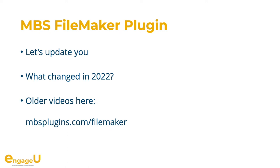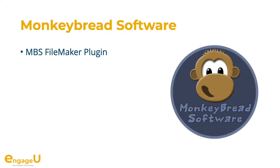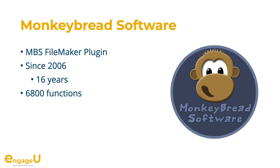If you'd like to learn more, we have a few videos on the website with older presentations. The MBS Plugin has been in development since 2006 — that is already 16 years. If it were a child, it would now be allowed to drink beer in Germany or to drive a car in the USA. We currently have 6,800 functions, so there should be something for everyone. About 200 functions are new this year and we are adding more as customers ask for them.